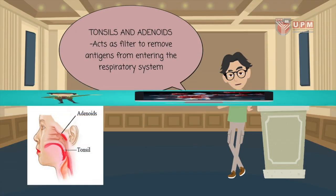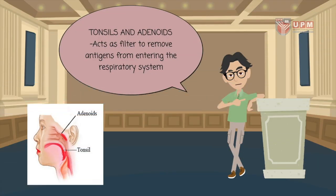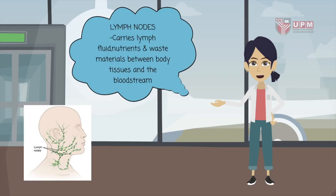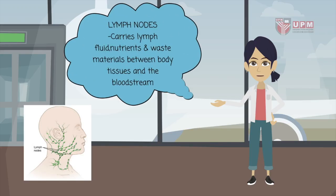The components of the immune system include tonsils and adenoids, which act as a filter to remove antigens from entering the respiratory system. The function of lymph nodes is to carry lymph fluid, nutrients and waste materials between body tissues and the bloodstream.